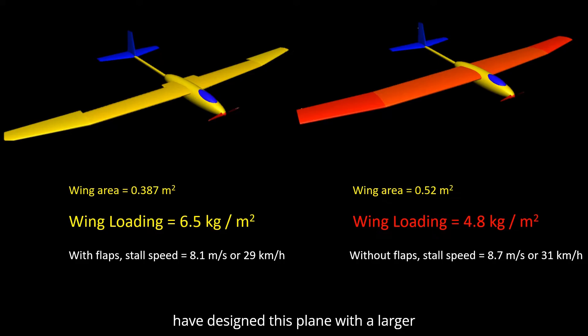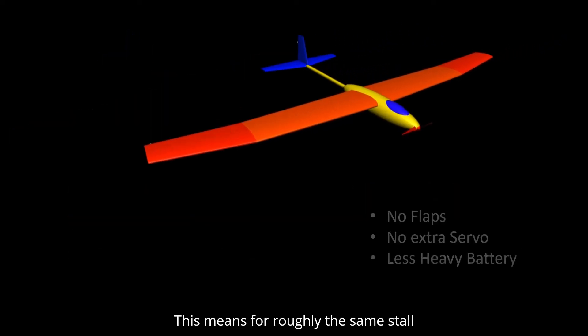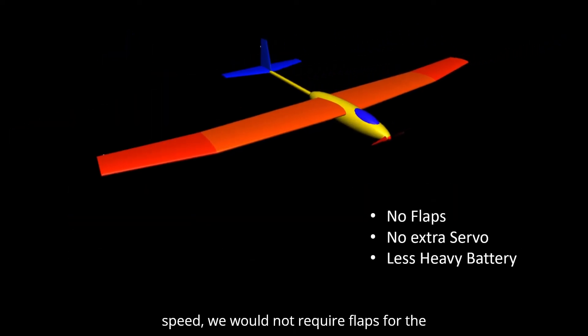We could have designed this plane with a larger wing, such as with a wing area of 0.52 square meter. This gives a lower wing loading, around 4.8 kilograms per meter squared. This would mean that the plane would stall at 8.7 meters per second or 31 kilometers per hour, even without flaps. This means for roughly the same stall speed, we would not require flaps for the larger wing. This means no extra servo and less heavy battery, so weight will be saved in this manner.